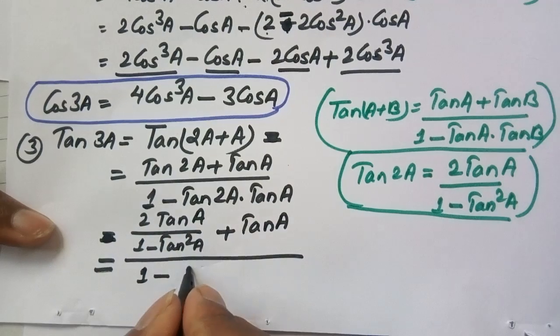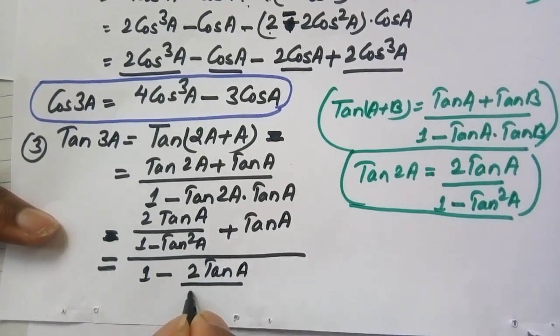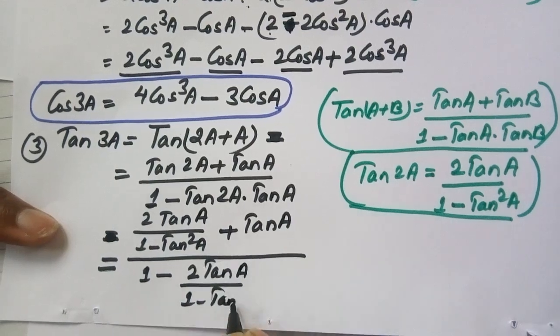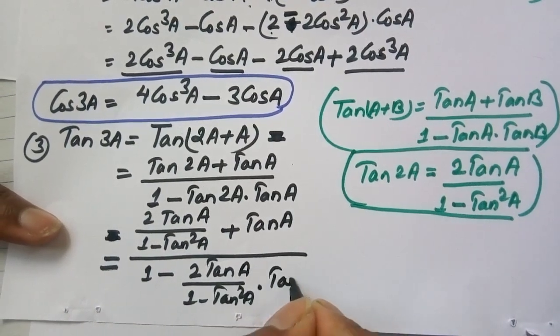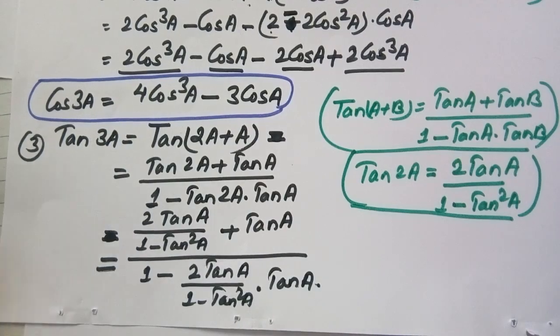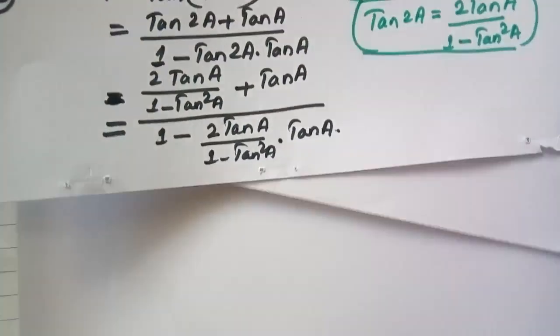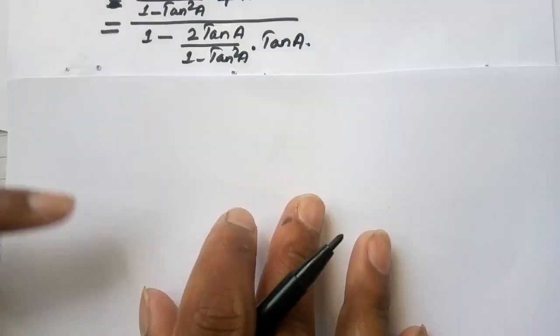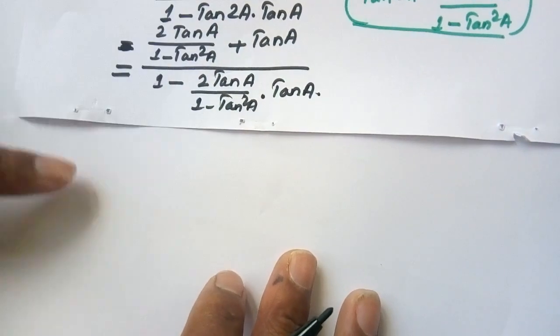Substituting tan 2a = (2 tan a)/(1 minus tan square a) into the expression: numerator becomes (2 tan a)/(1 minus tan square a) plus tan a, and denominator becomes 1 minus (2 tan a)/(1 minus tan square a) dot tan a. Taking LCM to simplify the numerator and denominator.